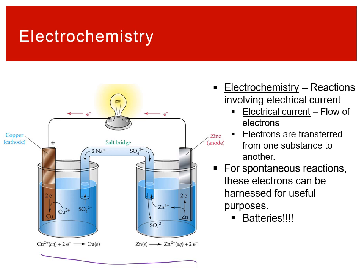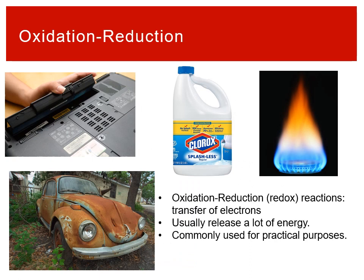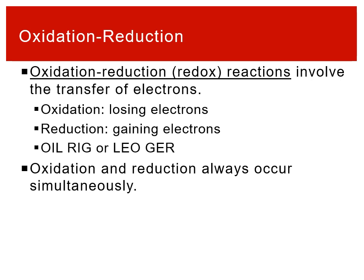All of this electrochemistry is driven by oxidation-reduction reactions, also called redox reactions. Beyond batteries, redox reactions appear in bleach, fire, and rust — there's usually a lot of energy involved that we can harness. Corrosion is a degrading redox reaction, but there are many practical redox reactions as well.